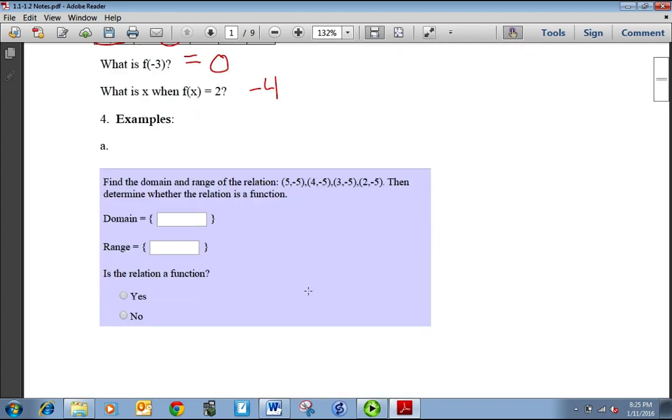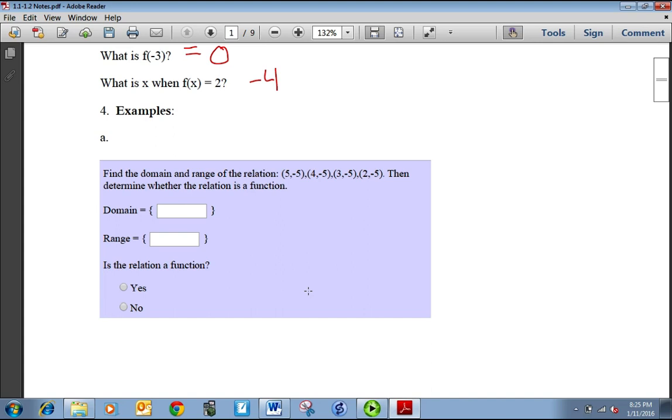Some more examples. Find the domain and range of a relation. So the domain are all the x values and here we can just list them because it's only four points. So they are 5, 4, 3, and 2. And the range or output values are all just negative 5. Now you don't want to list negative 5 more than once. Just listing it once is enough. And is the relation a function? Well let's see if any x values are repeated. The x values are 5, 4, 3, and 2. None of them are repeated so it must be a function.